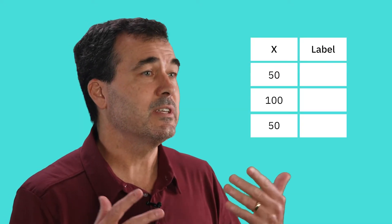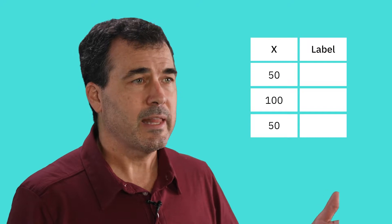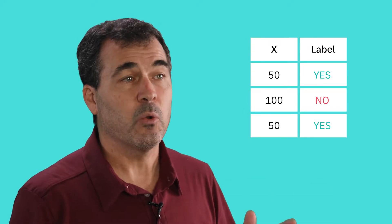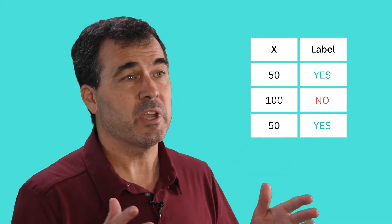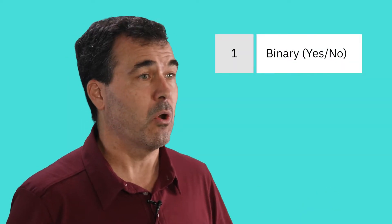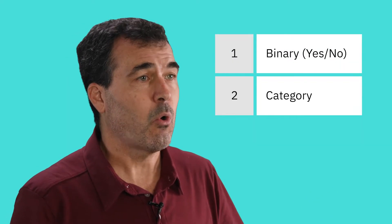As the name suggests, supervised learning needs guidance. We do this by using labeled data sets. A label is simply a known value that we specify on each row in the data set. It could be something as simple as a binary yes or no, a category, or a score.